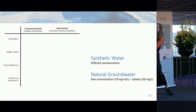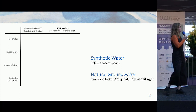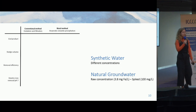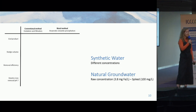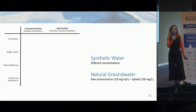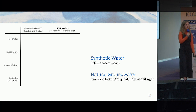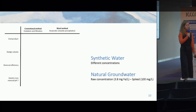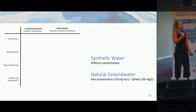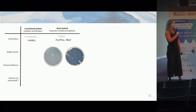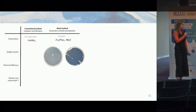I tested it in synthetic water with different iron concentrations, and also in natural groundwater obtained at a well in Loosdrecht, the Netherlands. For the natural groundwater, I used the natural iron concentration present — around 3.8 mg per litre — and I also did experiments with elevated concentrations, spiking the water to get an iron concentration of around 100 mg per litre. The first result: I successfully formed vivianite, as proven by XRD analysis.